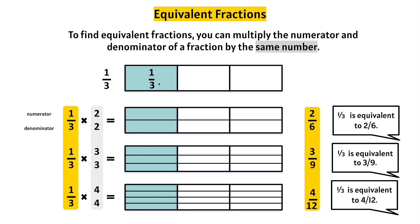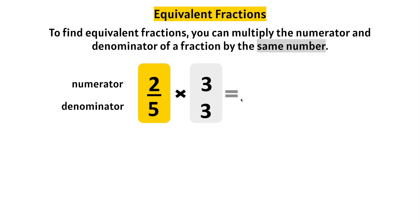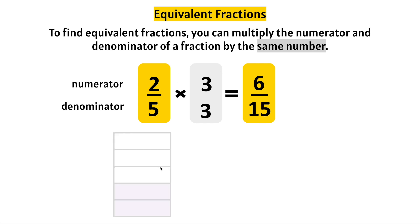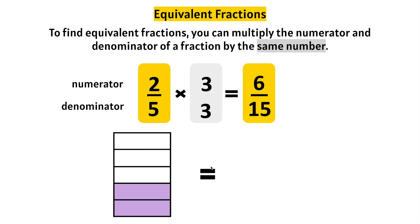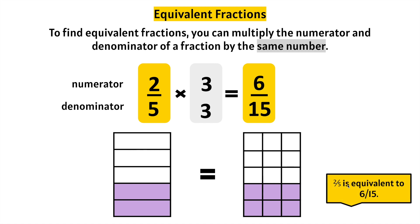They hold the same value. So remember, you can take any fraction and multiply the numerator and denominator by the same number — any number — and multiply straight across. Two times three is six, five times three is fifteen, and they are equivalent or equal in value. One, two, three, four, five — two are shaded — is the same as six-fifteenths. Let's count them all: twelve, thirteen, fourteen, fifteen. Two-fifths is equivalent or equal in value to six-fifteenths.